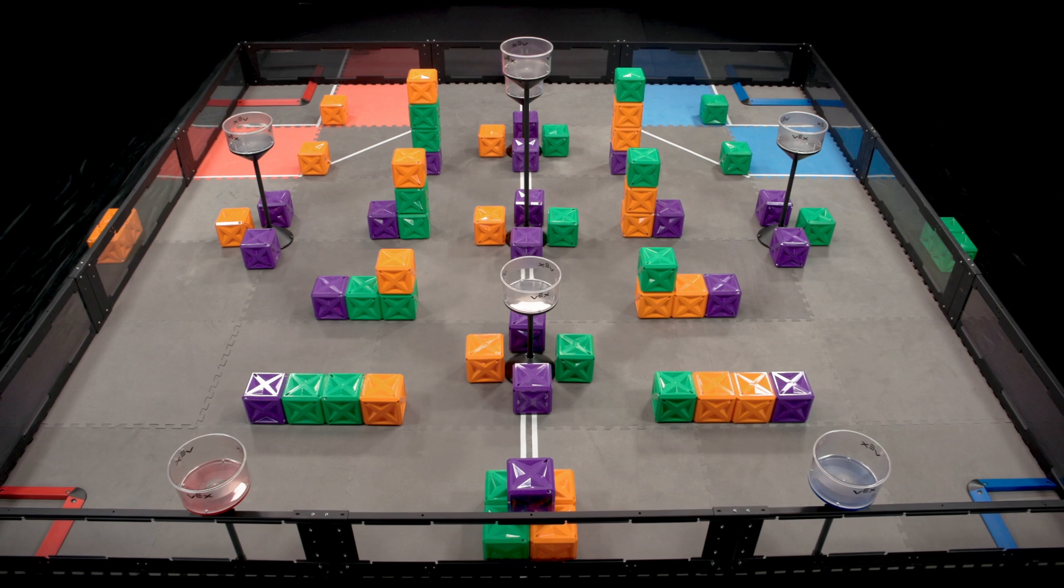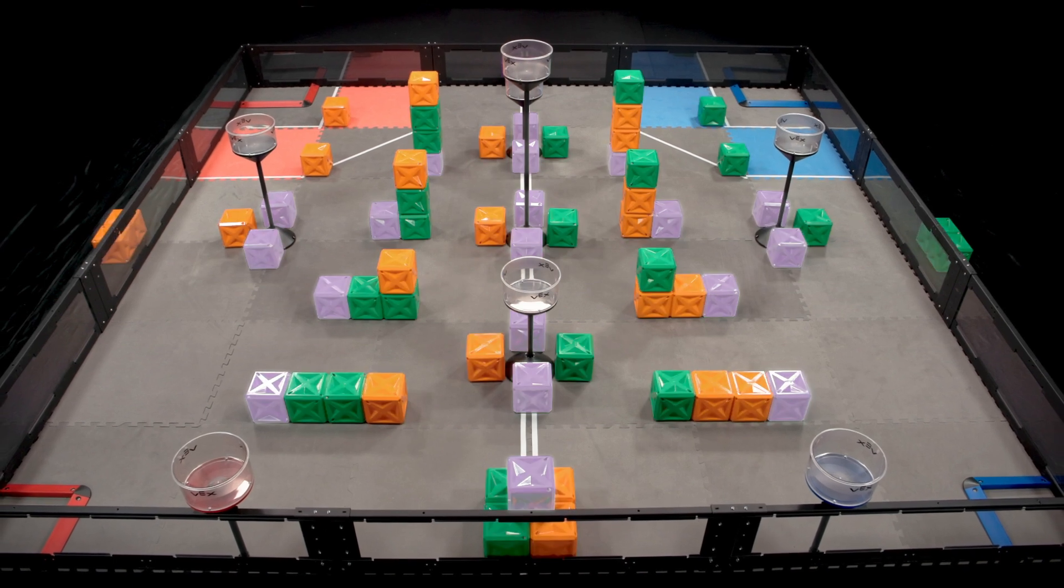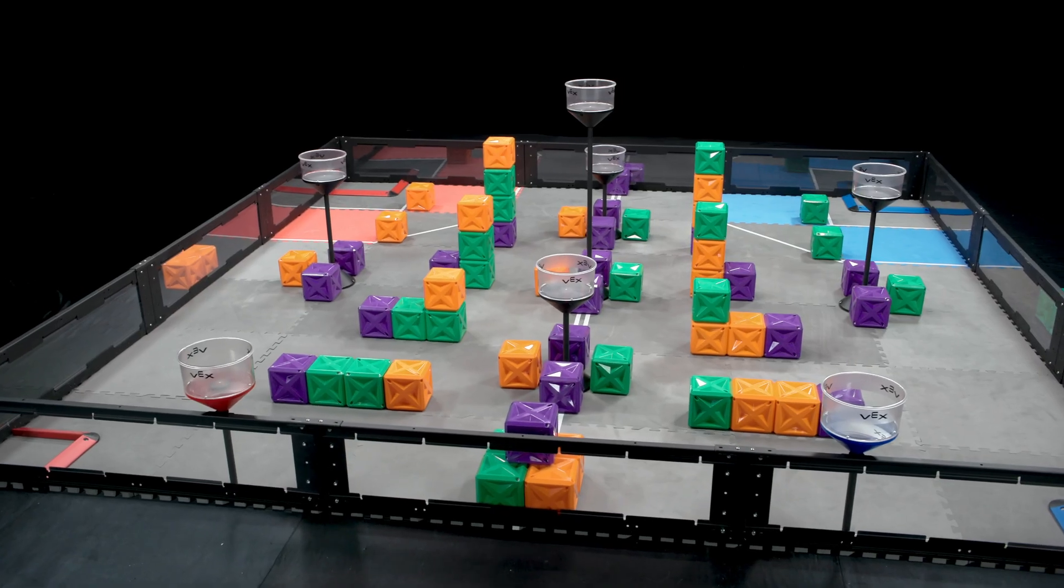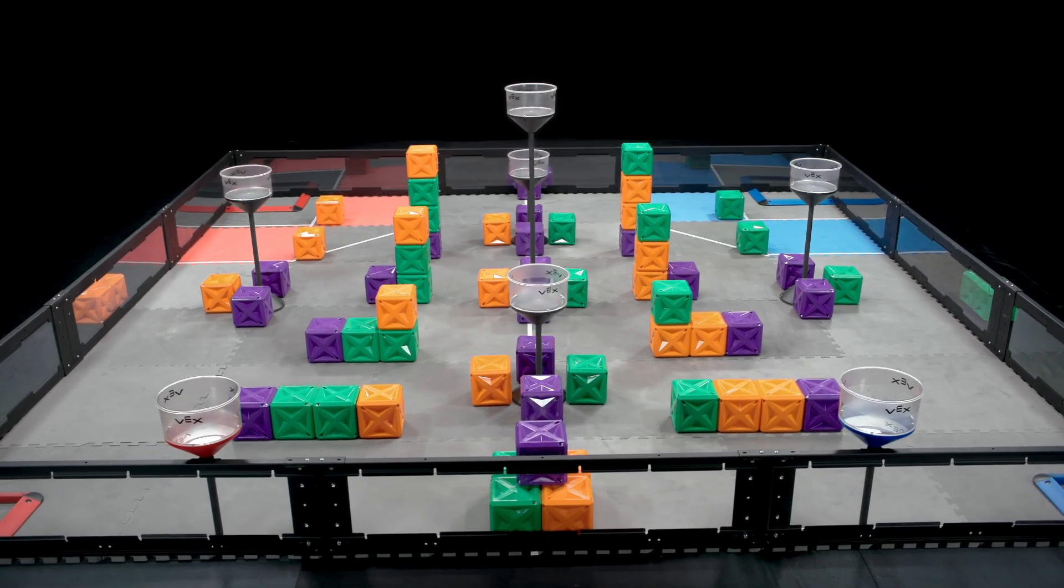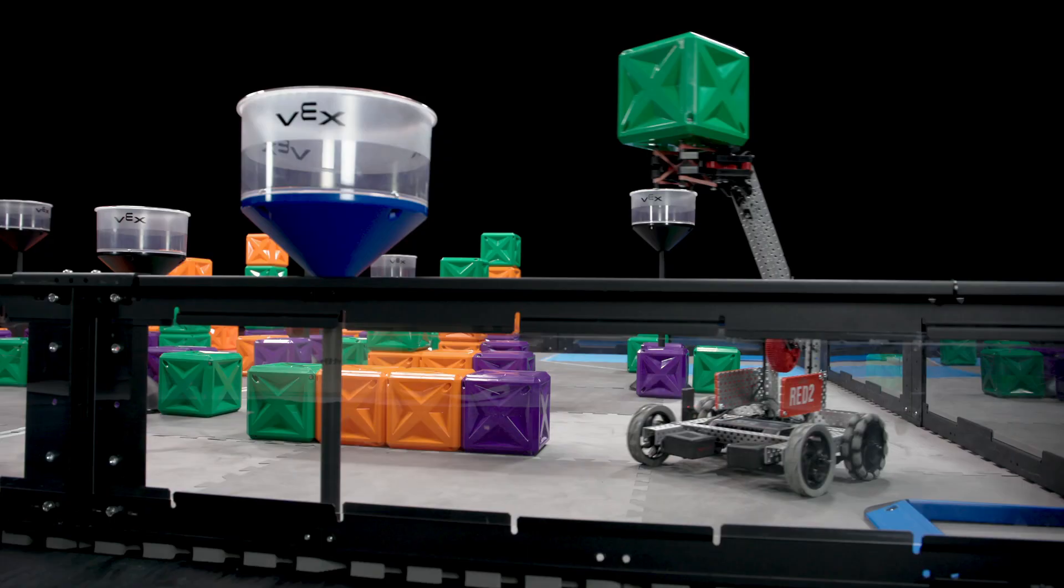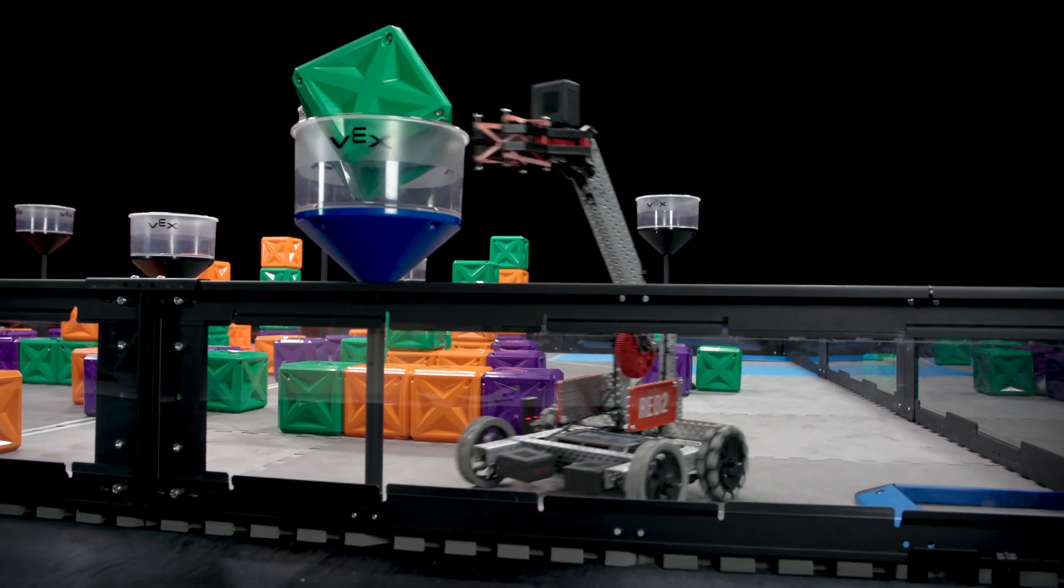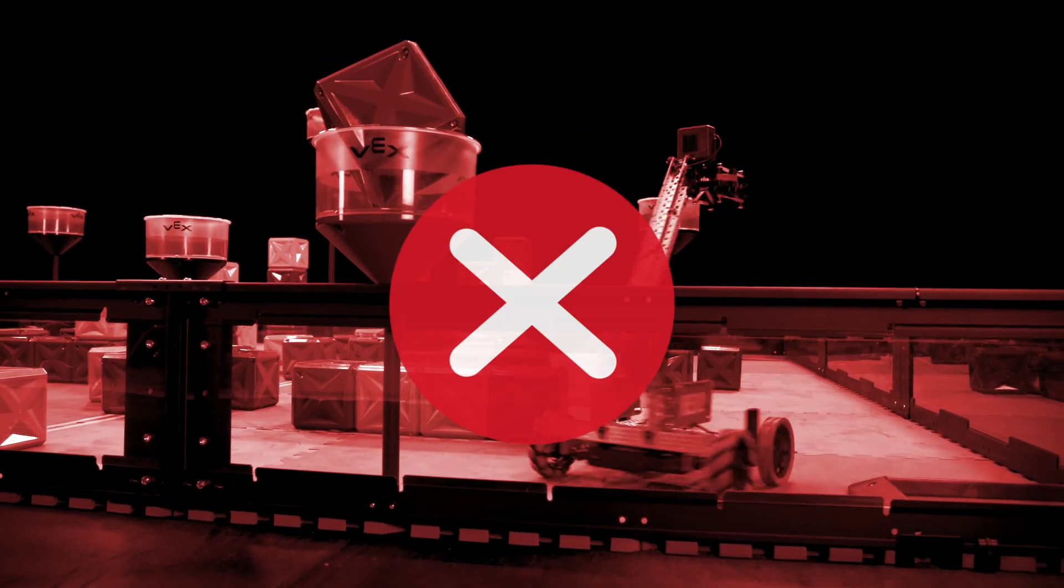There are 22 of each color: orange, green, and purple. In addition, there are seven towers around the field. Five of these are neutral and two are specific to your alliance. Alliance towers may only be utilized by robots from that alliance.